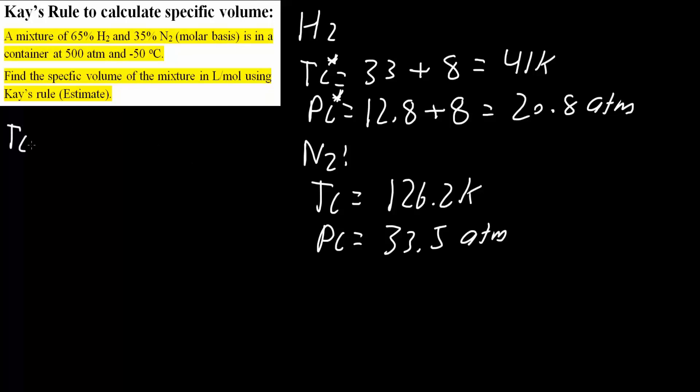The mixture TC value would equal, so we have 0.65 hydrogen, so 0.65 times 41K plus 0.35, the nitrogen, times 126.2K. Now, we would get 70.82K.